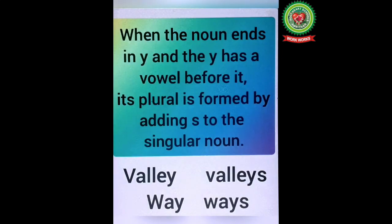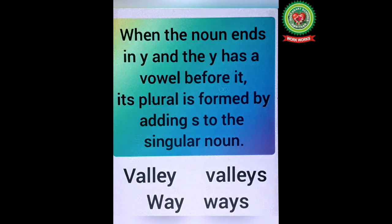The next rule is when the noun ends in Y and the Y has a vowel before it, its plural is formed by adding S to the singular noun. For example: valley → valleys, way → ways, etc.